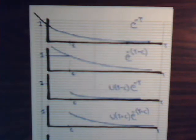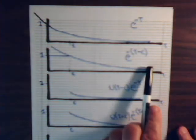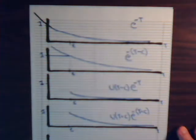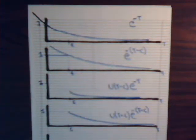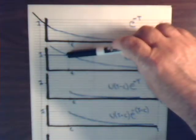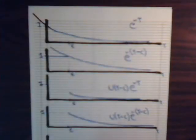What if we multiply this by u of t minus c. Then, in so doing, this is always zero except when t reaches the value of c, then it's one. So that would obliterate this part of the curve, leaving just this portion.